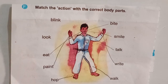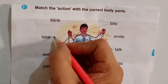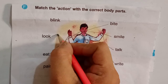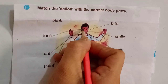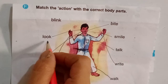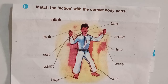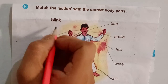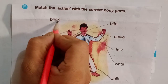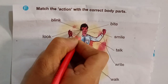Children, how can you look? You look with your eyes. So you will match the word 'look' to eyes. Children, how can we blink? We can blink with our eyes. So you will match the word 'blink' to eyes.